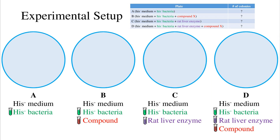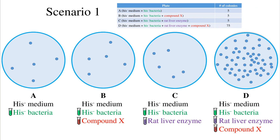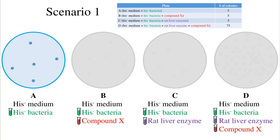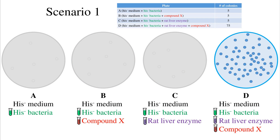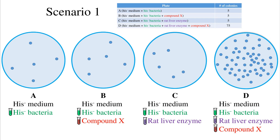Now we will walk through three different scenarios. We perform the Ames test on compound X. On plate A there are 5 colonies, on plate B there are 5 colonies, on plate C there are 5 colonies, and on plate D there are 75 colonies. Let's walk through our results one plate at a time to see what each plate tells us.